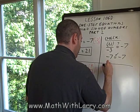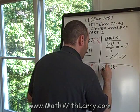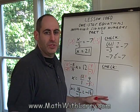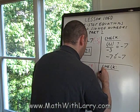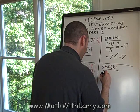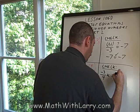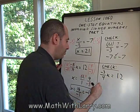Let's check. The check is especially important when you're working with negatives like this, and it's so easy to make a mistake and get confused. So here's my original problem: negative three-fourths times x equals 12. I'm going to substitute negative 16.